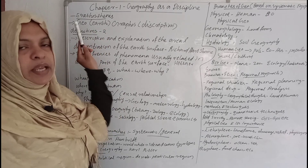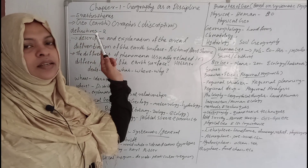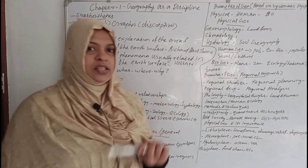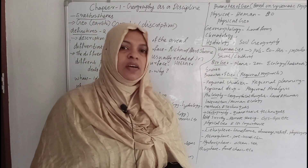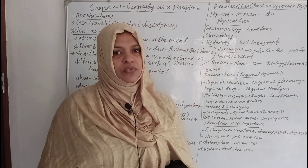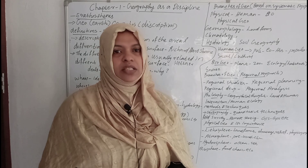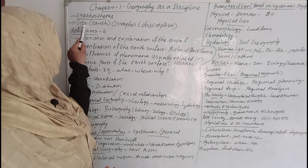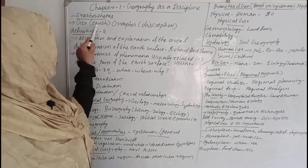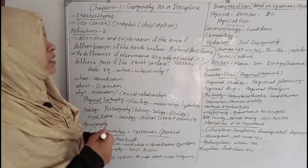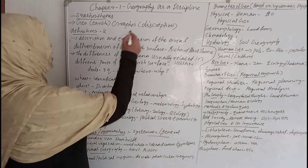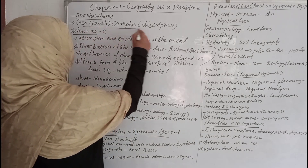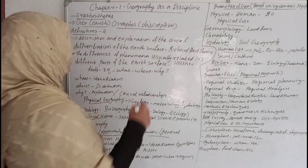Geography means — Geography is derived from a Greek word. The word is called Geo, and Graphos means description. So the term is called Geography.